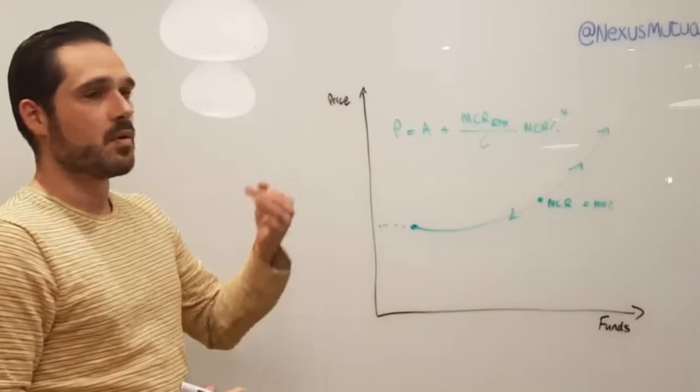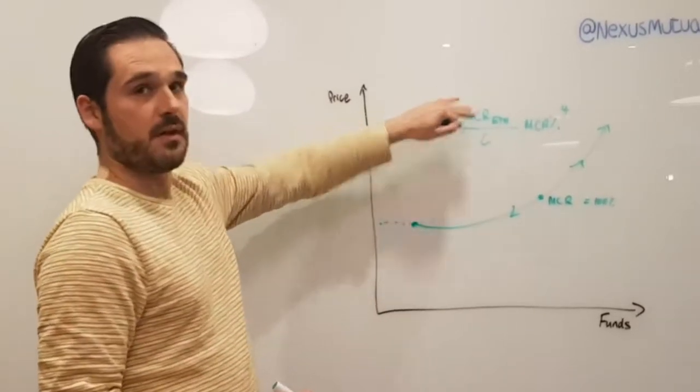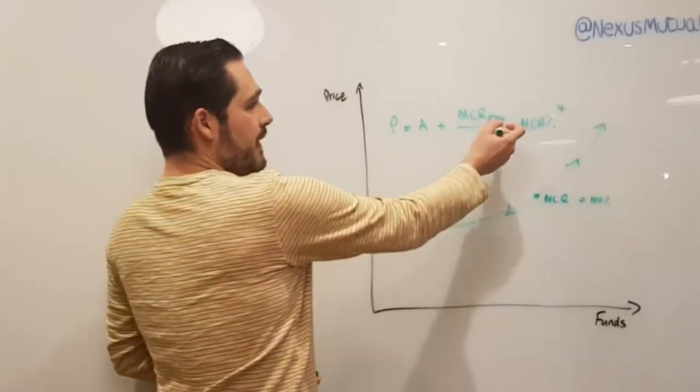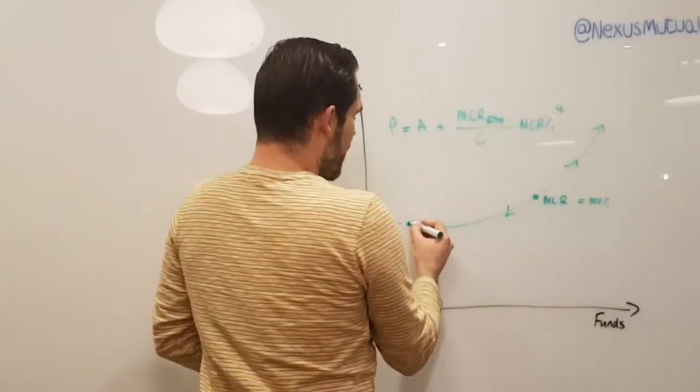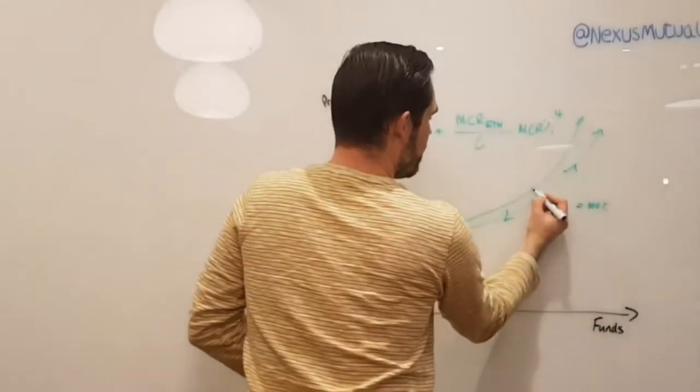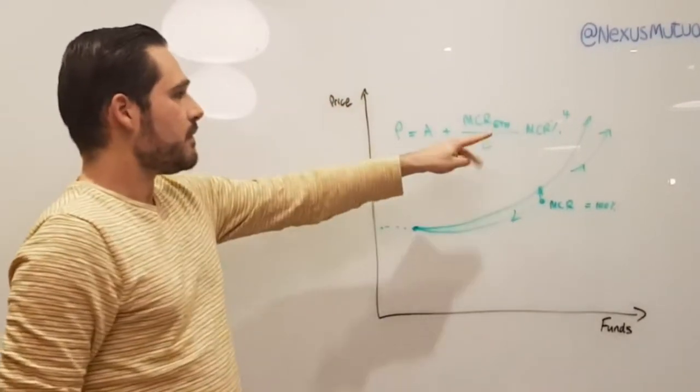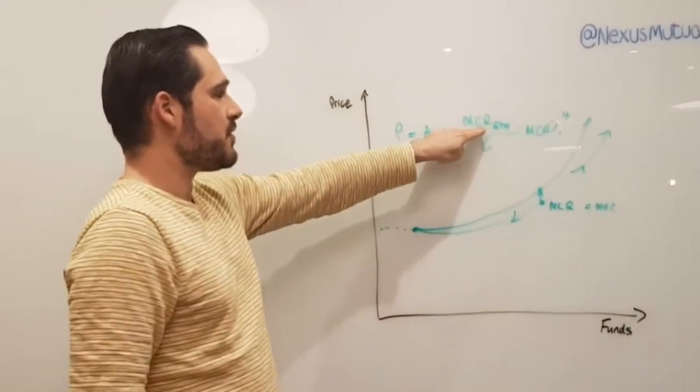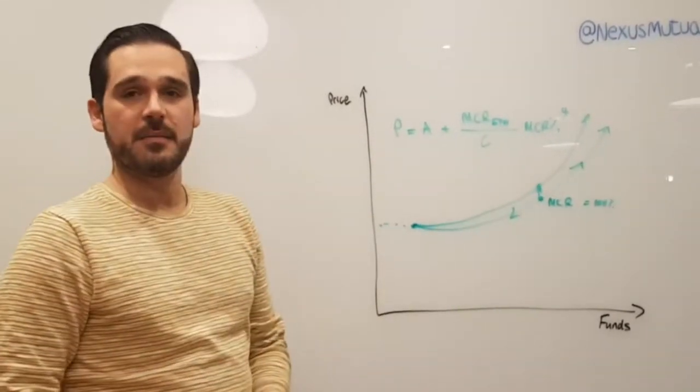It's driven by the number of covers that we have. The more covers we have, the more capital we need to back them, and therefore this is like an adoption thing. When the MCR grows over time, then what happens is the curve starts moving and actually starts doing this, and the MCR value keeps going up. So long-term price driver, short-term price driver. And that's the crux of the token model.